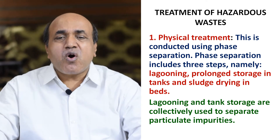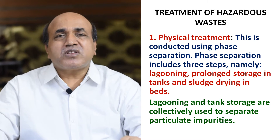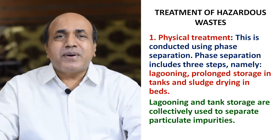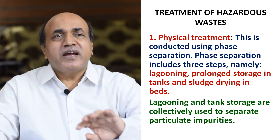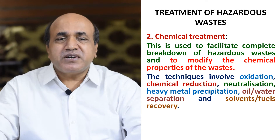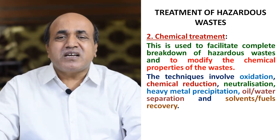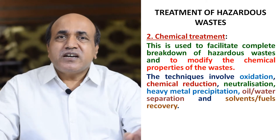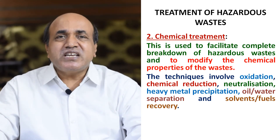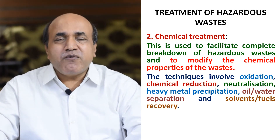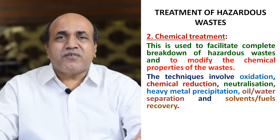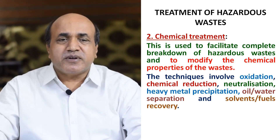Physical treatment includes lagooning — prolonged storage in tanks — and sludge drying in mats. Lagooning and tank storage are collectively used to separate particulate impurities. Chemical treatment is used to facilitate complete breakdown of hazardous waste and to modify the chemical properties so it becomes non-toxic. This technique involves oxidation, chemical reduction, neutralization, heavy metal precipitation, oil-water separation, and solvent recovery.